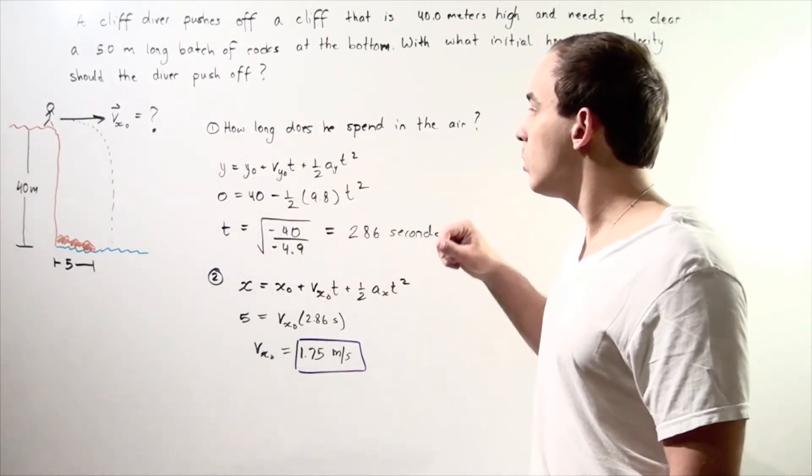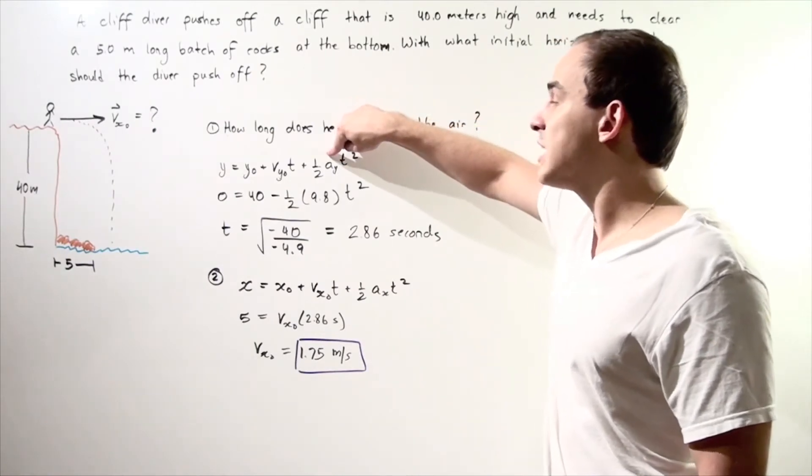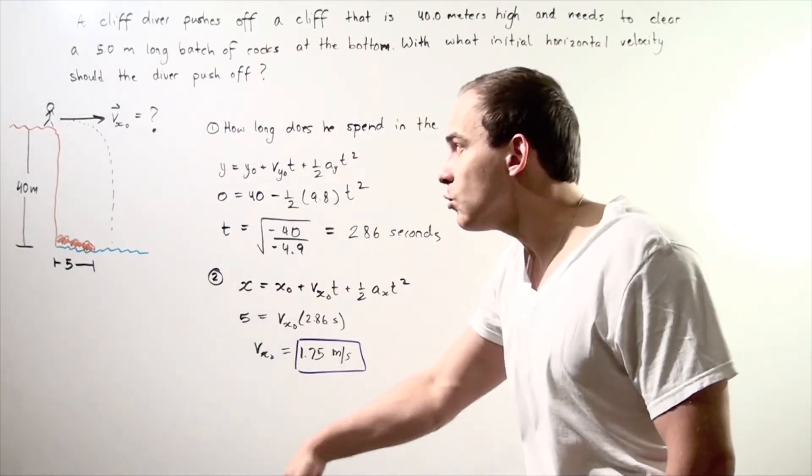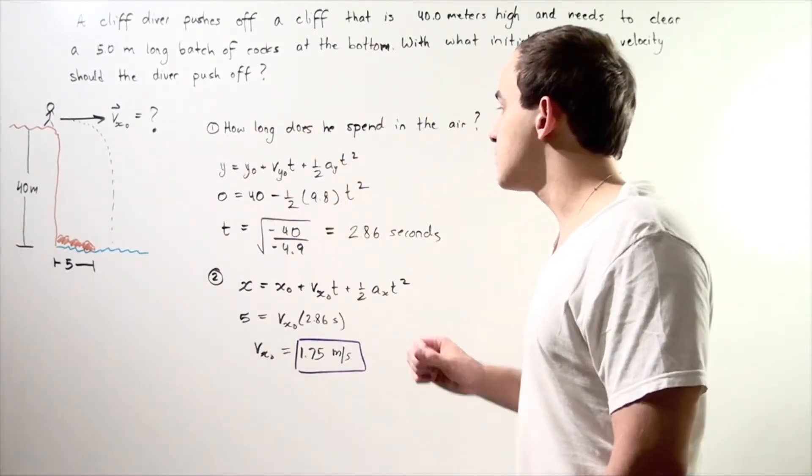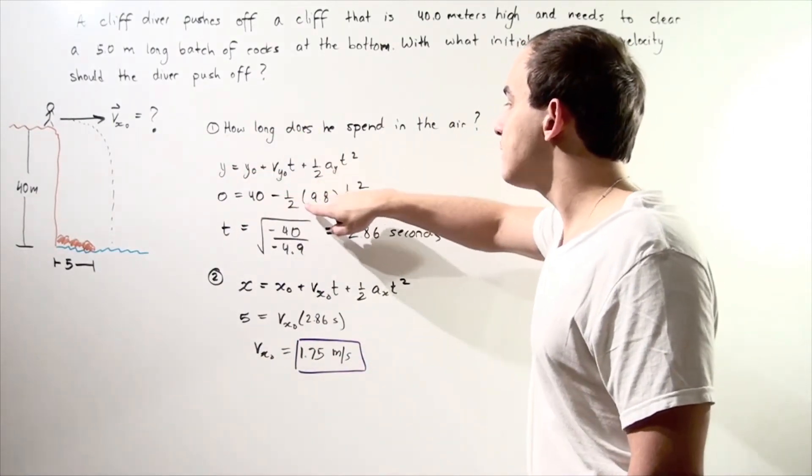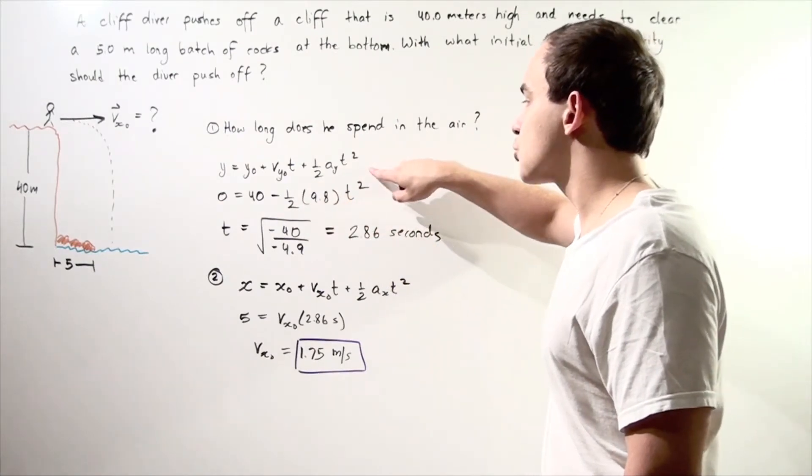why is it minus? Well, because our gravitational constant, which points downward, is negative. Because we chose the downward position to be negative. So, minus 1 half times 9.8 t squared.